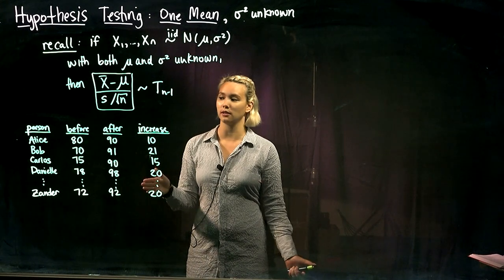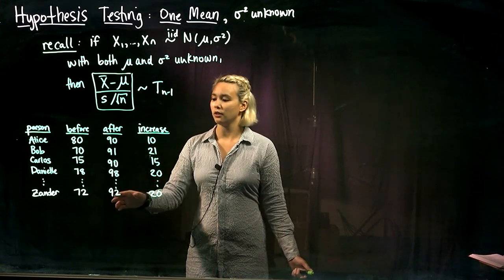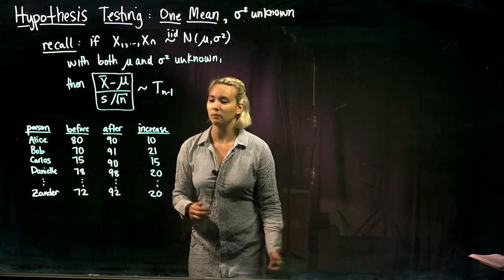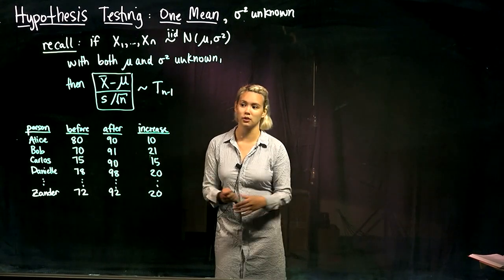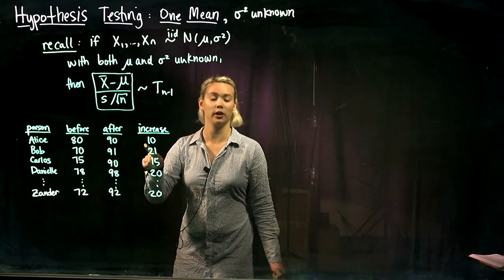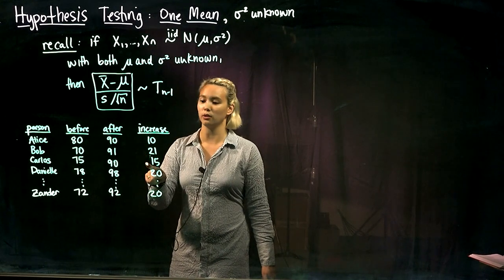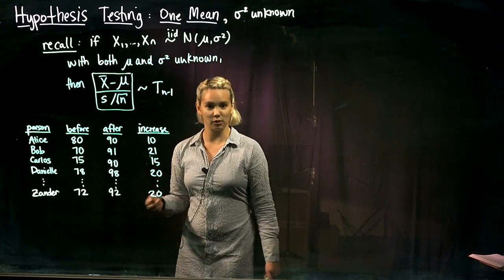And got these new scores: 90, 91, 90, 98, 92. So if the class works then we would see an increase. In other words, if the class is effective, the scores after the class should be better than the scores before the class. So what we could do is calculate each person's increase. So like Alice was 80, after is 90, so her increase was 10. Bob's increase was 21, Carlos's increase was 15, Danielle's increase was 20, Xander's increase was 20.